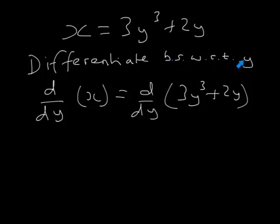So it's d by dy of x equals d by dy of 3y cubed plus 2y. It's okay to write this abbreviation, but you do need to write out something to explain what you're doing. d by dy of x equals d by dy of 3y cubed, that's 9y squared plus 2.